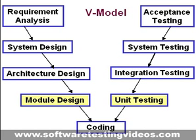The module design phase can also be called low level design. The designed system is broken up into smaller units or modules and each of them is explained so that the programmer can start coding directly. The low level design document or program specifications will contain a detailed functional logic of the module in pseudo code, database tables with all elements including their type and size, all interface details with complete API references, all dependency issues, error message listings, and complete input and outputs for a module. The unit test design is developed in this phase.